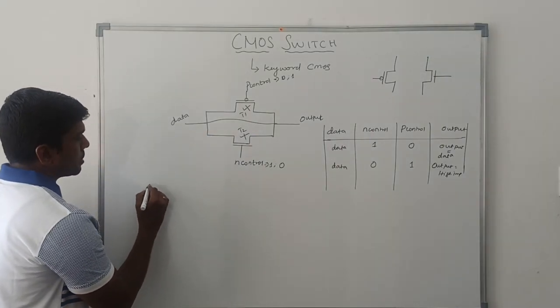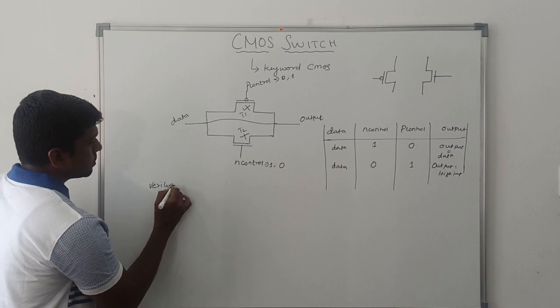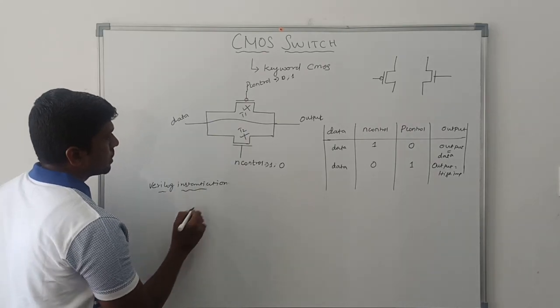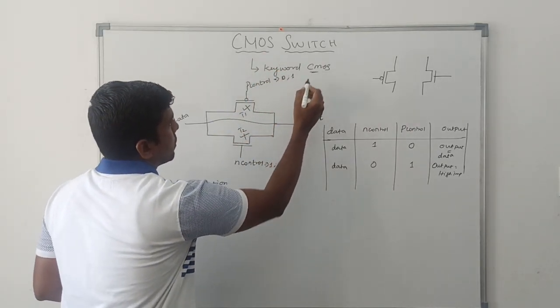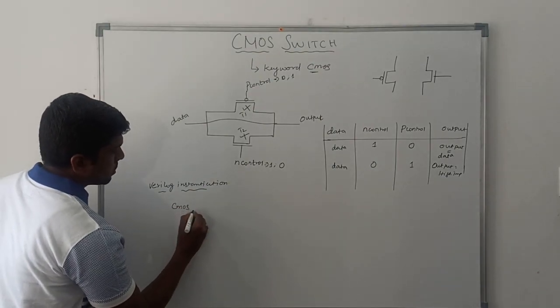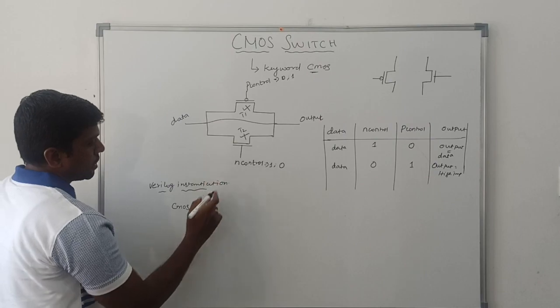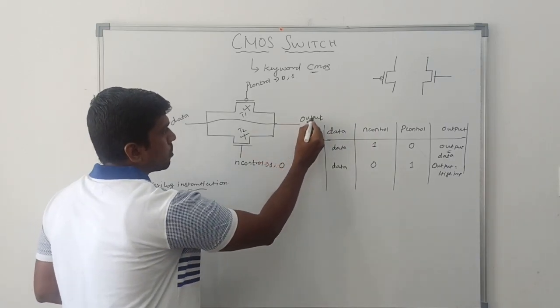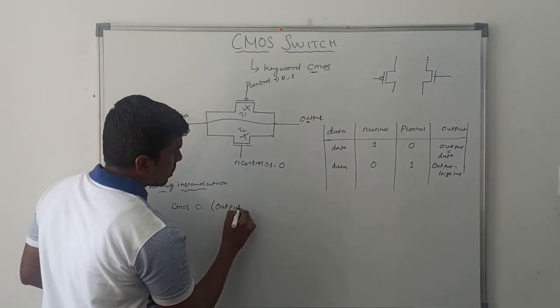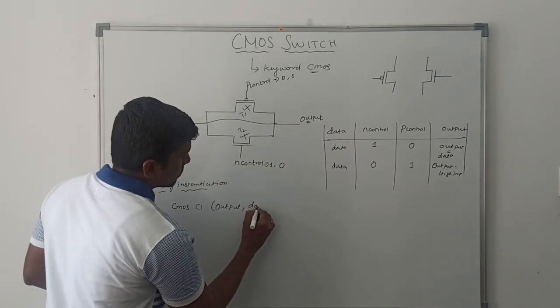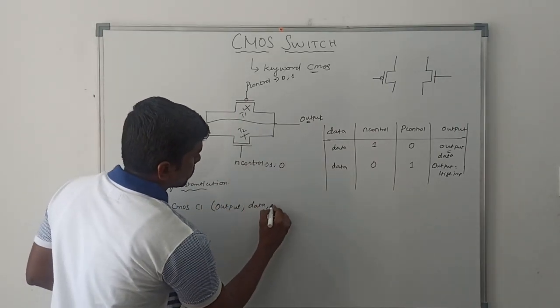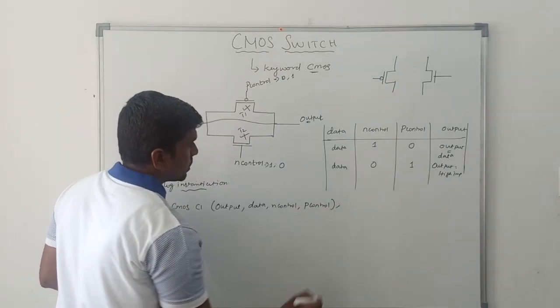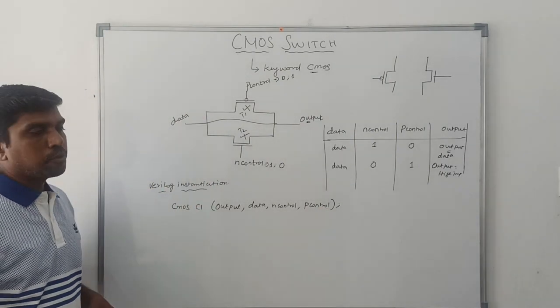Then come to the Verilog instantiation for CMOS switch. This CMOS switch keyword is CMOS. CMOS is the device name. Within a bracket, mention the input variables and output variable. Here output variable is output: output comma data comma these two control signals - N control comma P control. It is the Verilog instantiation for CMOS switches.